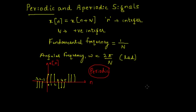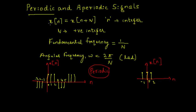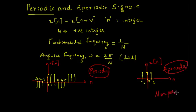Let me draw another signal where the x-axis represents time n and the y-axis represents signal x of n. This is a discrete time signal. The signal starts at minus 1 and ends at 1. Discrete time signals of this type are known as aperiodic signals, because there may be a pattern but it never repeats — the signal starts and the signal ends. These signals are also known as non-periodic signals.